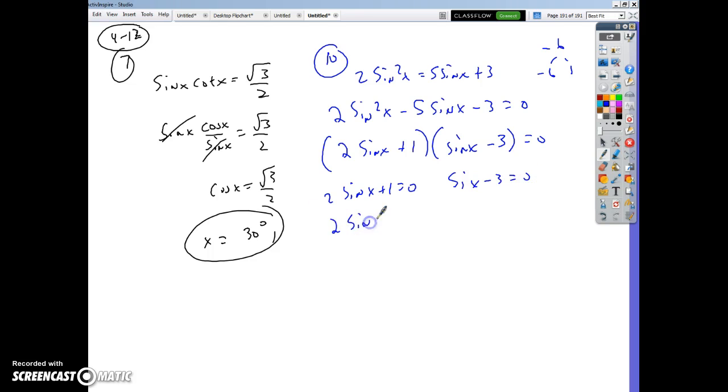2 sine x equals negative 1. Sine x equals 3. Sine x equals negative 1 half. And grade? Yeah. Okay, cool. Sine x equals 3 is what? Can I make a 3? Between 1 and negative 1. And then negative 1 half?